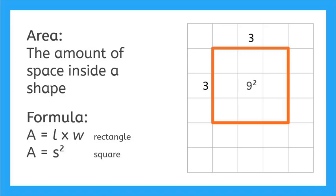So I have a total of 9 squares. This little bitty 2 here next to the 9 means squared. So what we would say is the area of this square is 9 squared.